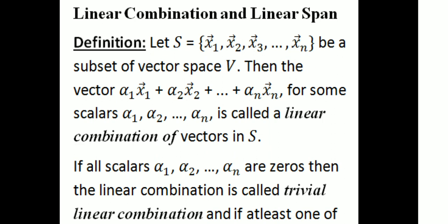We obtain the scalars α₁, α₂, ..., αₙ to form α₁x₁ + α₂x₂ + ... + αₙxₙ. If all scalars α₁, α₂, ..., αₙ are zero, then the linear combination is called a trivial linear combination.